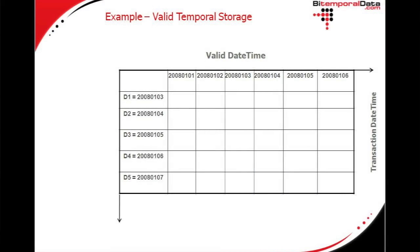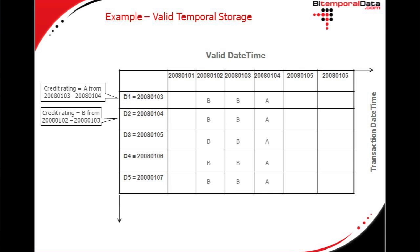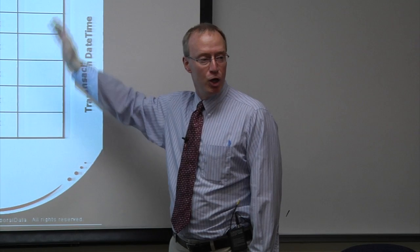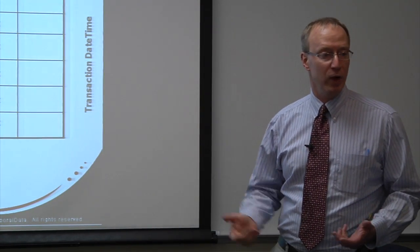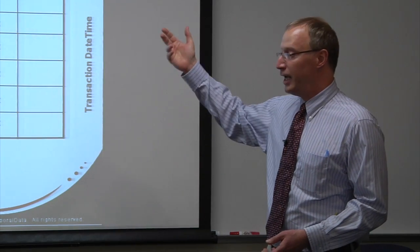Now we'll go through the same example as if we only had valid temporal support. Again, event one gives us A in the columns for the third and fourth. Event two — our correction — gives us B for the second and third. Event three: C for the first through the fifth. What you're probably noticing is that, unlike bitemporal data where past transaction rows were stable, in valid temporal data we don't have that stability. Any event can come along and change any cell in this matrix.